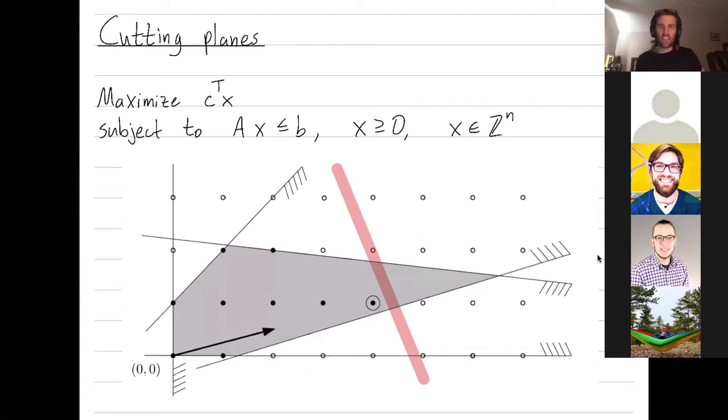So the basic idea of cutting planes is as follows. Pretend we have a linear programming problem. The constraints are given by this gray polytope, and the direction vector that we're trying to maximize is given by this black arrow. But pretend, furthermore, we want a solution where all the variables are integers. So our only possible solutions are not the entire gray polytope, but only these black integer points inside of it.